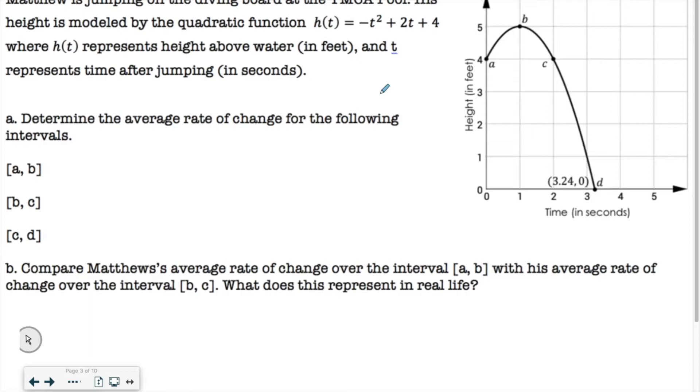All right, so Matthew is jumping off the diving board at a YMCA pool. His height is modeled by the quadratic function h of t equals negative t squared plus 2t plus 4, where h of t represents the height above water in feet, and t represents the time after jumping in seconds. Determine the average rate of change for the intervals a to b, b to c, and c to d.